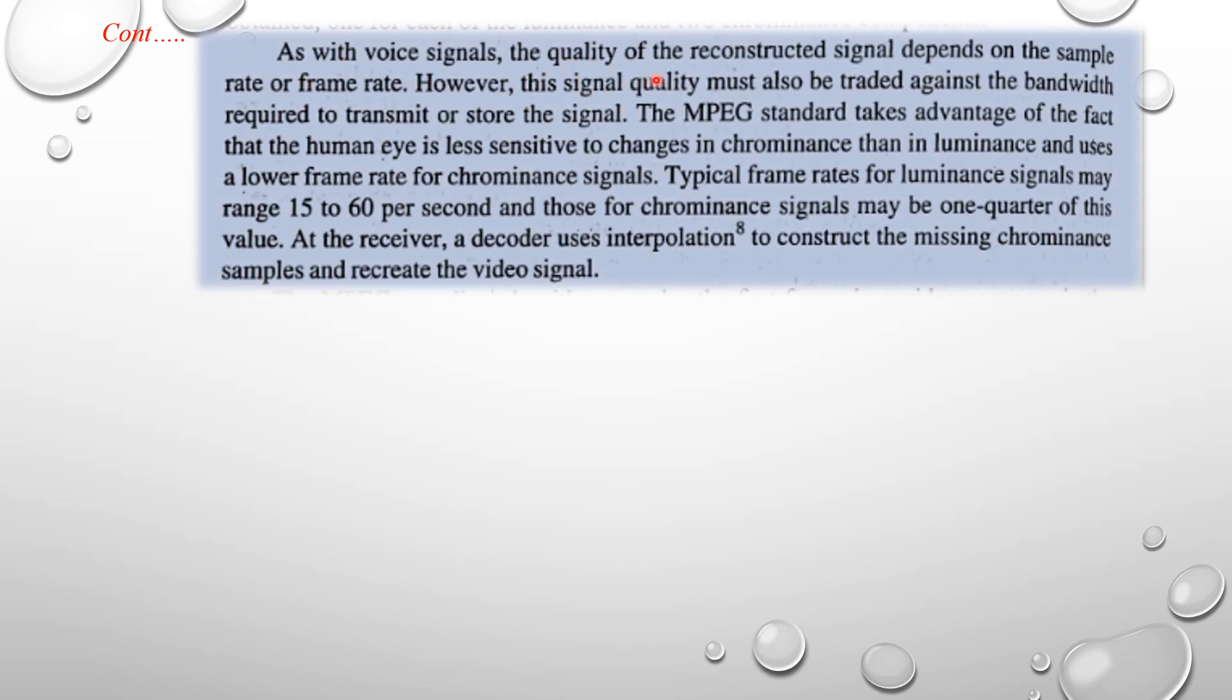As with voice signals, the quality of the reconstructed signal depends on the sample rate or frame rate. However, this sample quality must also be traded against the bandwidth required to transmit or store the signals. The MPEG standard takes advantage of the fact that the human eye is less sensitive to changes in chrominance than luminance and uses a lower frame rate for chrominance signals. Typically frame rate for luminance signals may range from 15 to 60 per second, and those for chrominance signals may be one quarter of these values. At the receiver, the decoder uses interpolations to construct the missing chrominance samples and recreate the video signals.